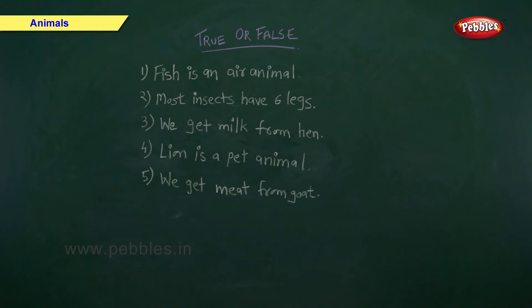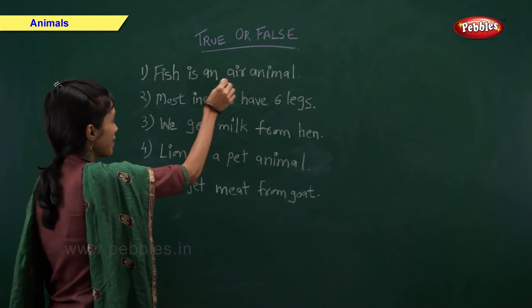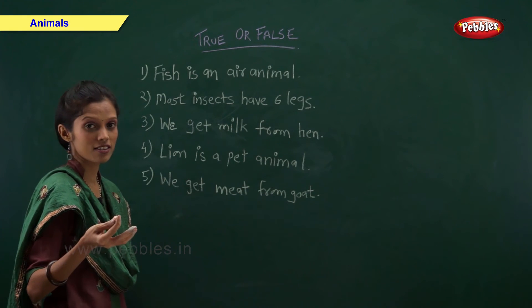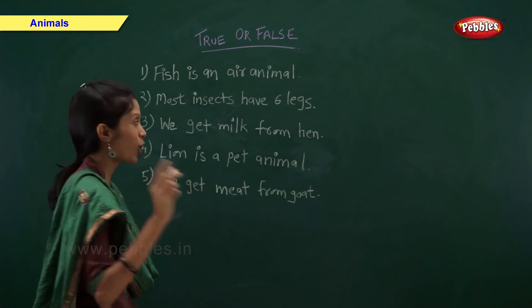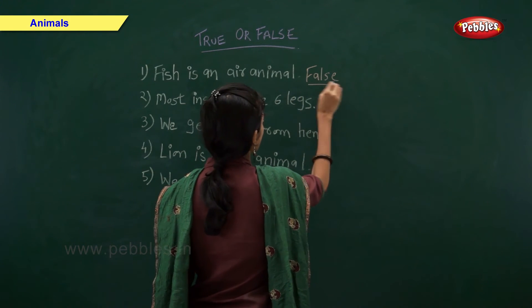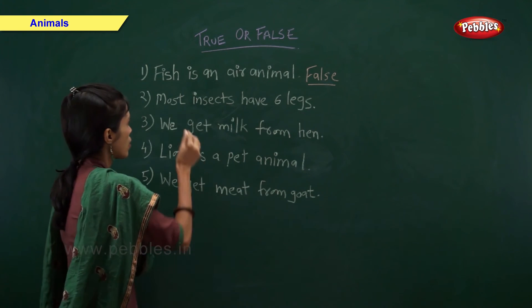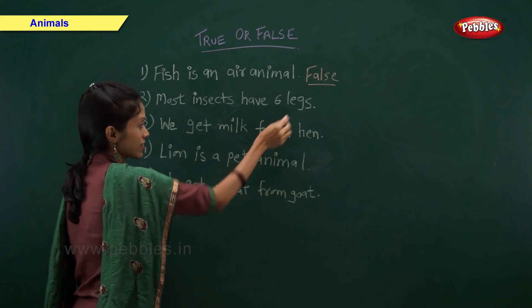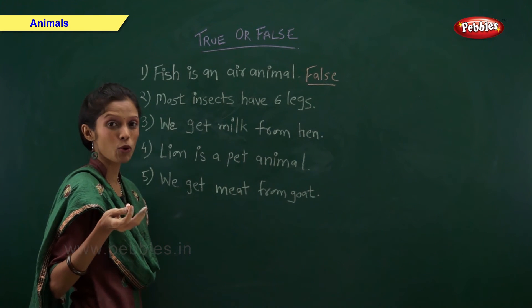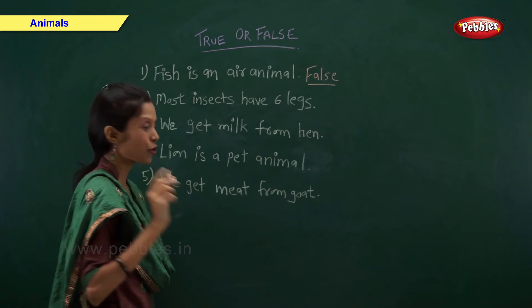Fish is an air animal — true or false? Come on, tell me. I told you earlier. No, that is false — fish is a water animal.